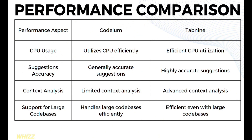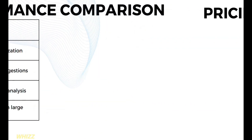In terms of suggestion accuracy, Codium provides generally accurate suggestions, while Tab9 offers highly accurate suggestions. For context analysis, Codium offers limited context analysis, while Tab9 offers advanced context analysis. And in terms of support for large codebases, Codium handles large codebases efficiently, while Tab9 is efficient even with large codebases.